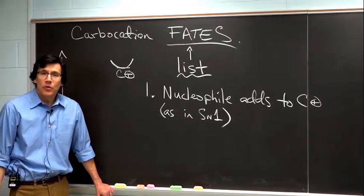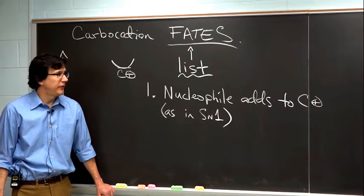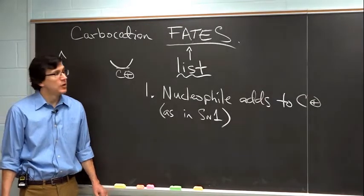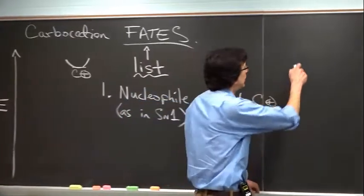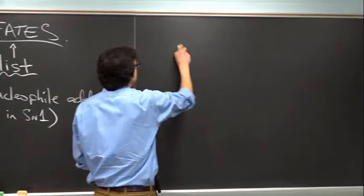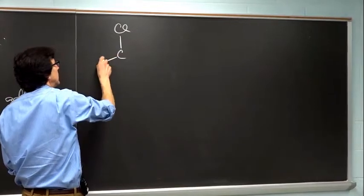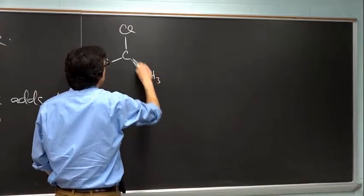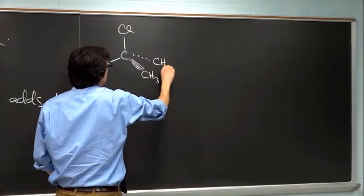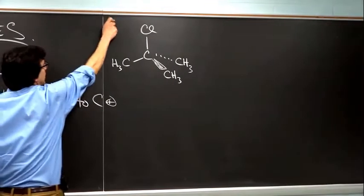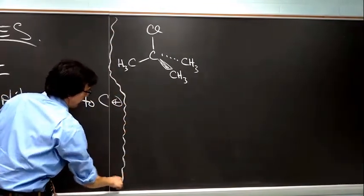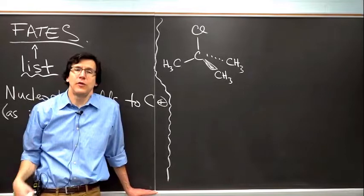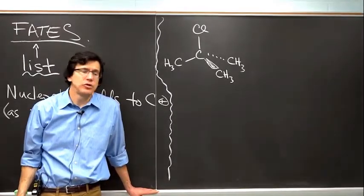What I want to do now is I want to work through a problem where something else can happen to the carbocation intermediate. So let's just come over here to this board. And let's start with the following compound. So let's do a little nomenclature here. What would you call this compound in terms of not really its systematic name, but more of its common name? So think about how many carbons there are and so on. What would you call this?